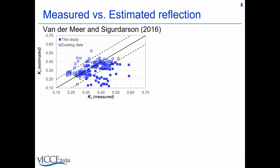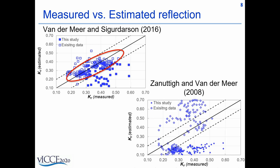It can be seen that the Van der Meer and Sigurdarson formula developed from berm breakwater data estimates quite well the new data though there is scatter and some underestimations. The Zanuttigh and Van der Meer formula estimations have considerable scatter and this is in line with the observations for emerged berm cases mentioned in their study.